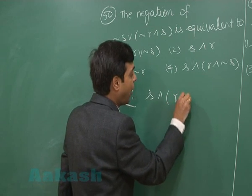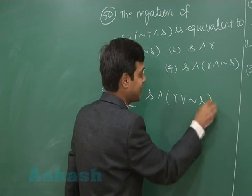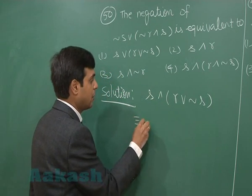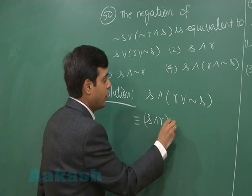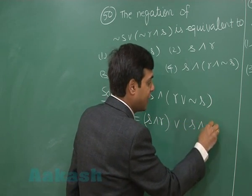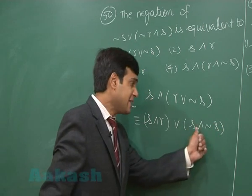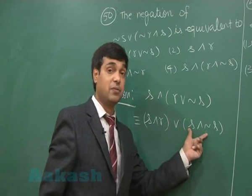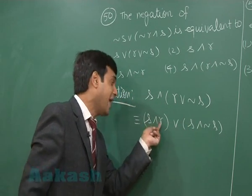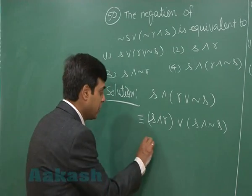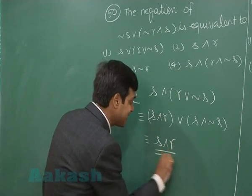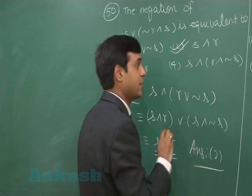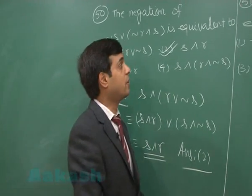This gives us R ∨ ¬S. Then distributing the AND: S∧R or S∧¬S. Since S∧¬S is a fallacy, and OR of anything with a fallacy gives the other term, we are left with S∧R only. So this is equivalent to S∧R, which is option number 2.